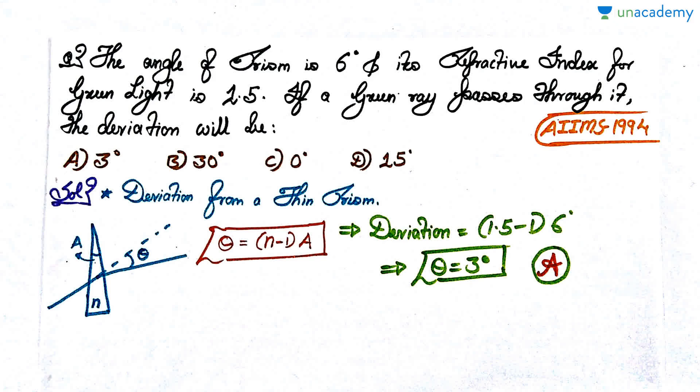The question goes as follows: The angle of prism is 6 degrees and its refractive index for the green light is 1.5. If a green ray passes through it, the deviation will be 3 degrees, 30 degrees, 0 degrees, or 15 degrees. It was asked in AIIMS 1994. As usual, pause the video, attempt the question, and then we'll discuss the solution.